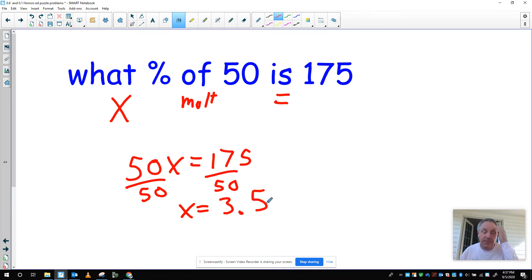And I get X equals 175 divided by 50 gives me X equals 3.5. Now, I have to make sure this answer is reasonable. Is that a reasonable percentage? No, I have to realize that's a decimal form. So I have to move my decimal point two places. So my answer would be 350 percent. Now, is that a reasonable answer? Is 350 percent. So what percent of 50 is 175?